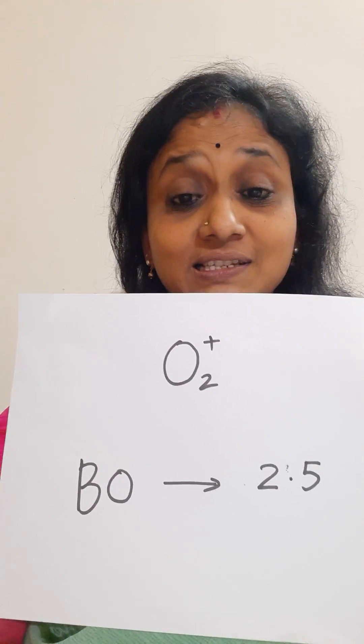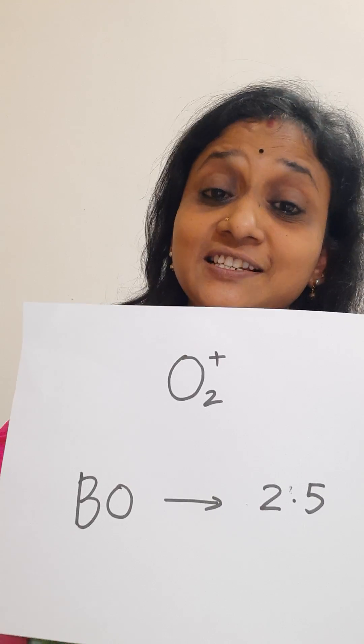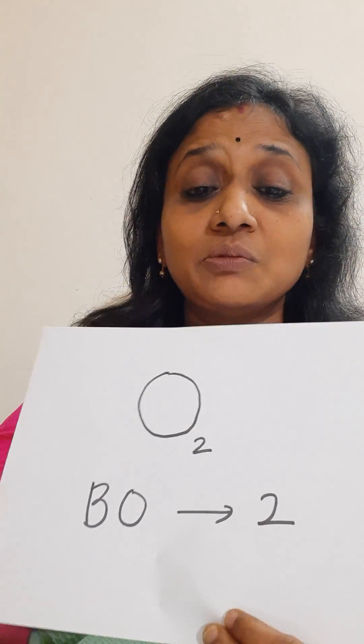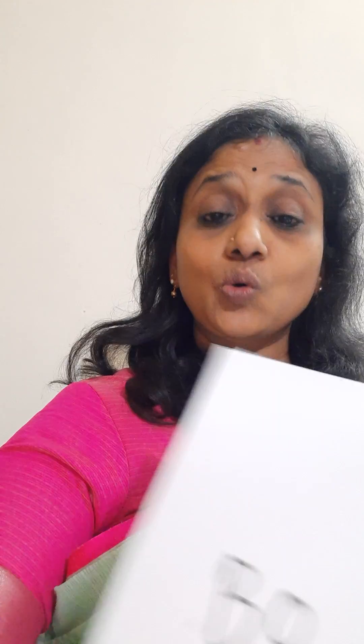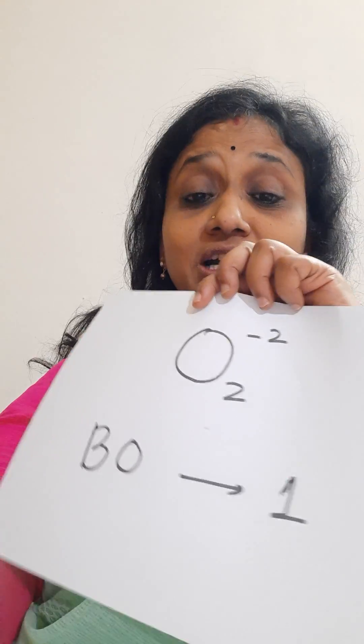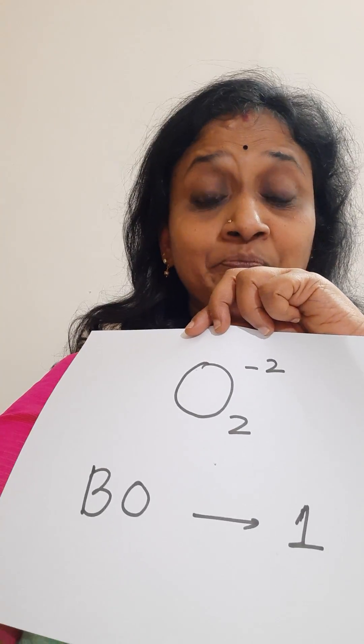Let us see the question. They've given different options. Let me show the paper. They've given O2+ — what is the bond order? It is 2.5. They've given one more example: O2 — bond order is 2. Then O2⁻ — bond order is 1.5. And finally O2²⁻ — bond order is 1.